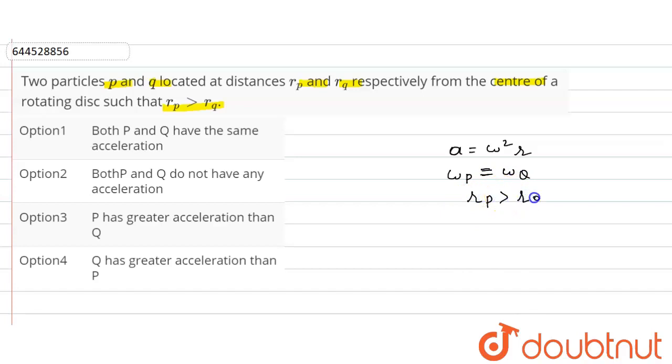So see, here rp is greater than rq, so acceleration of P will be greater than acceleration of Q. Because see here, this acceleration only depends on this r value, and omega P and omega Q will be same.